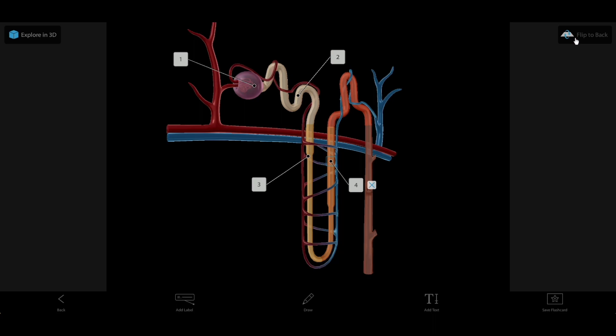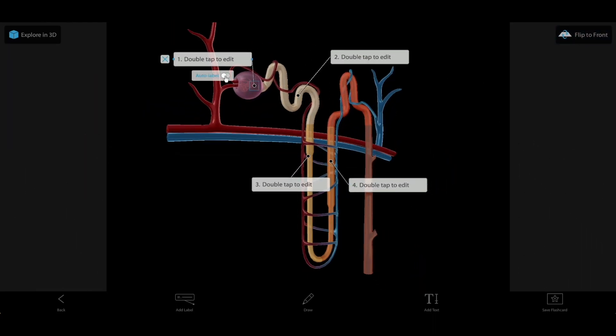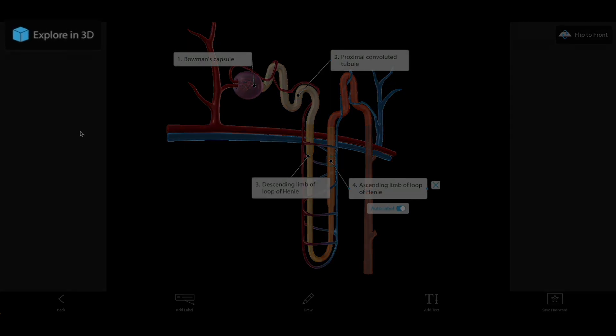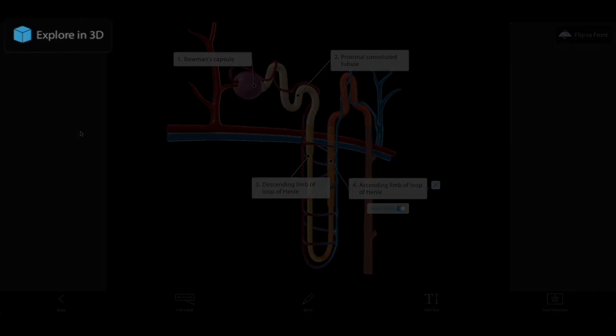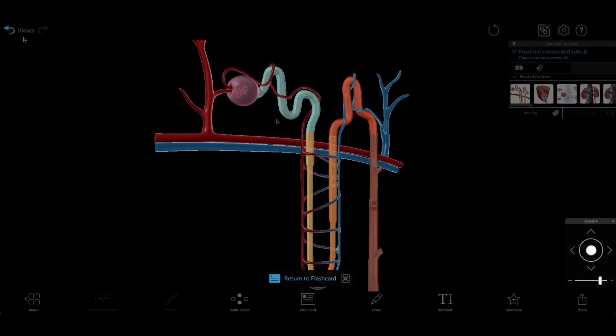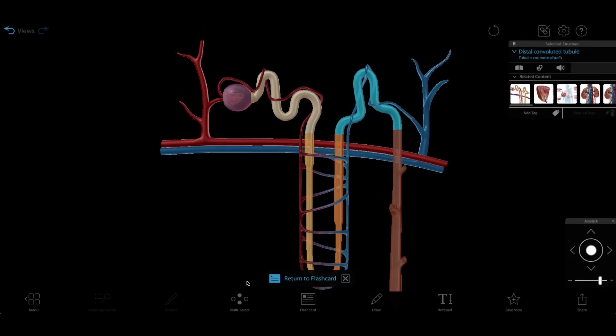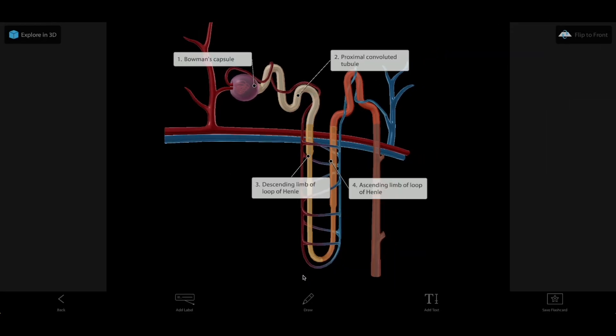Auto-labeling makes sure that the answers on the back of the flashcard are always correct. And the Explore in 3D feature lets students do a deeper dive if they're having trouble finding an answer, while allowing them to jump right back to the flashcard when they're done.